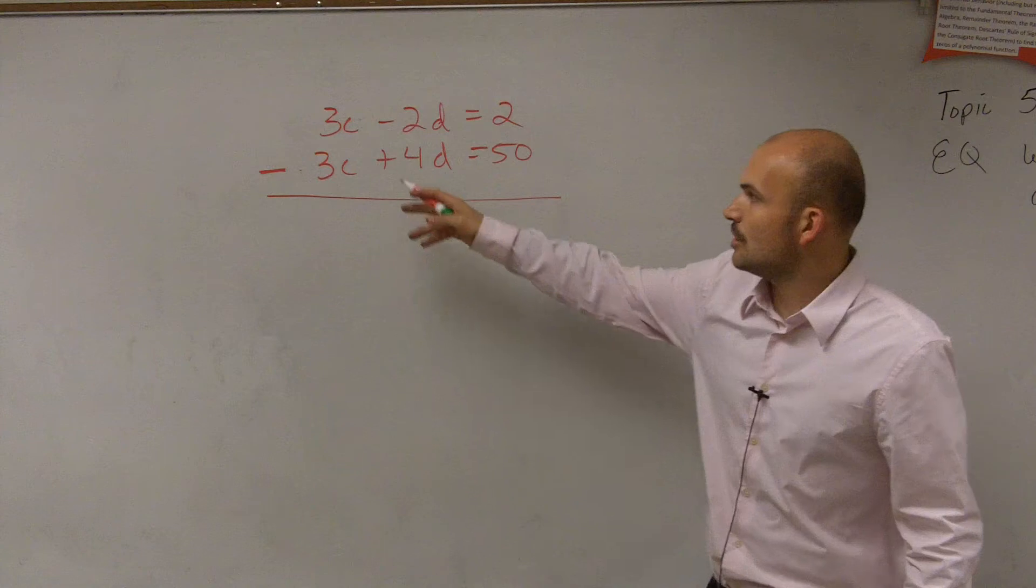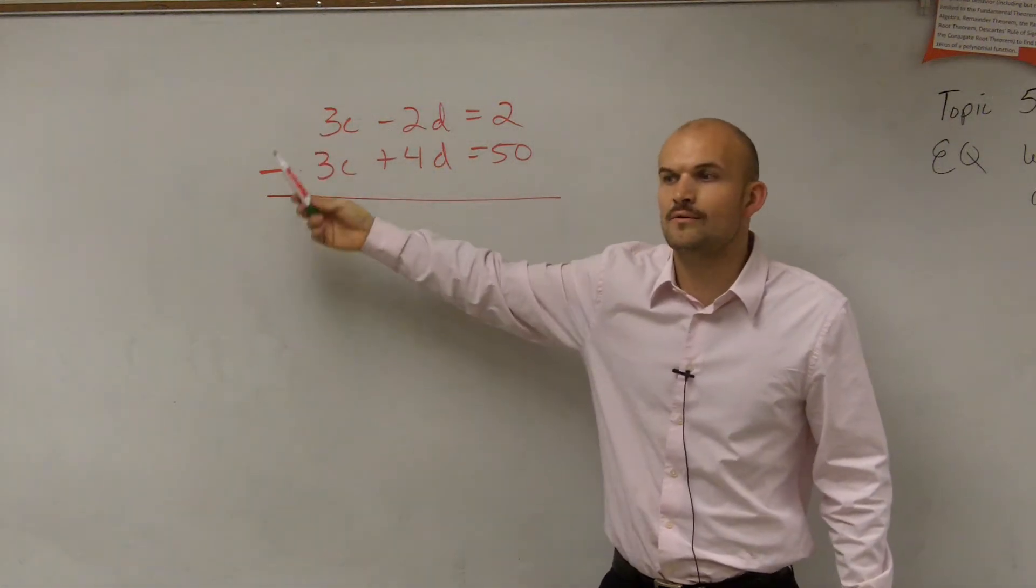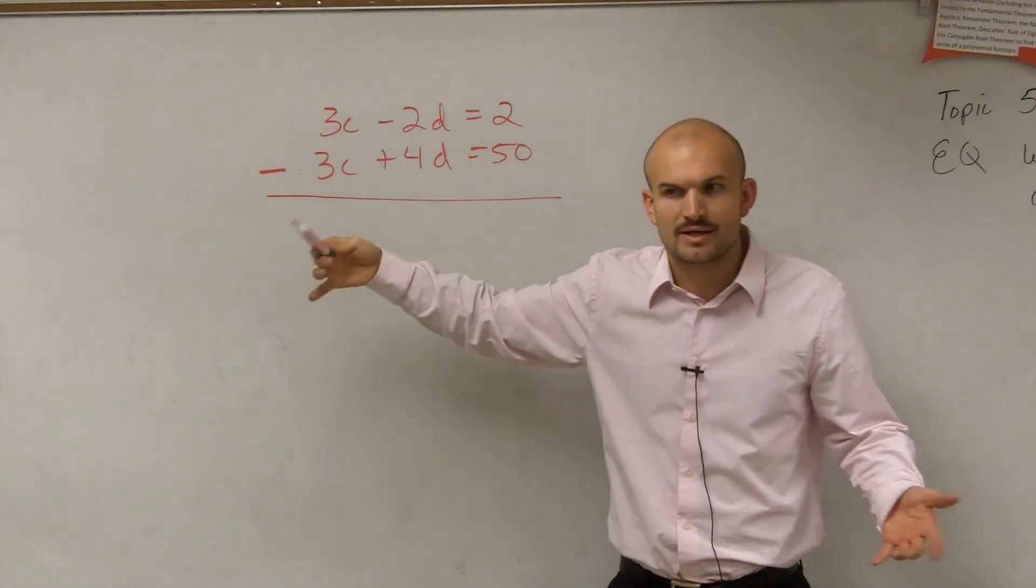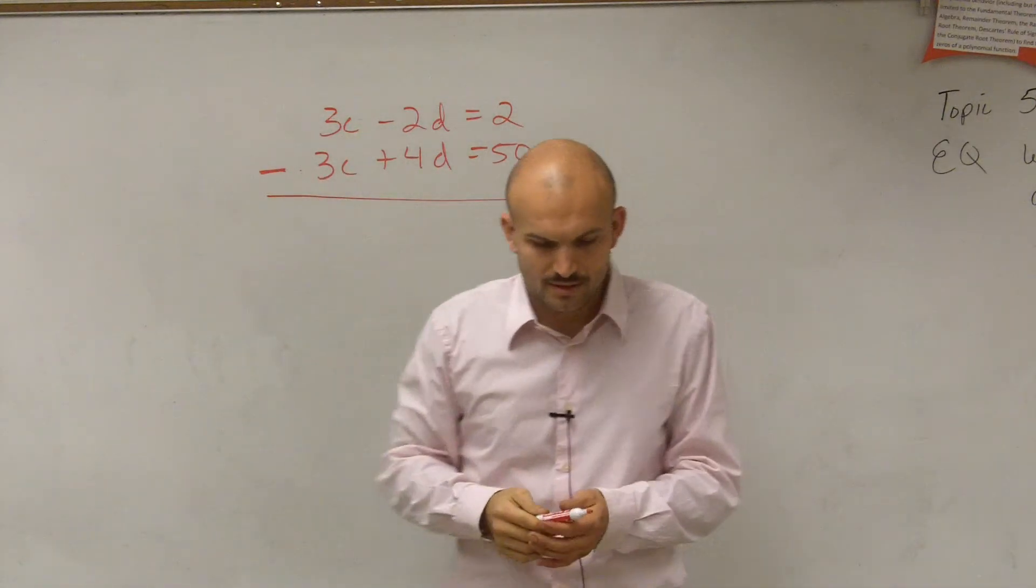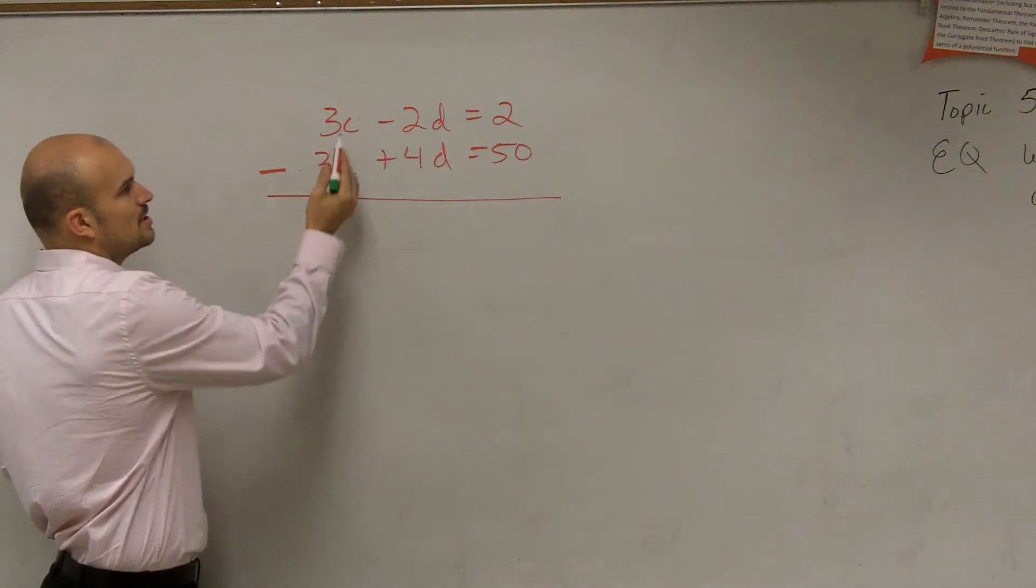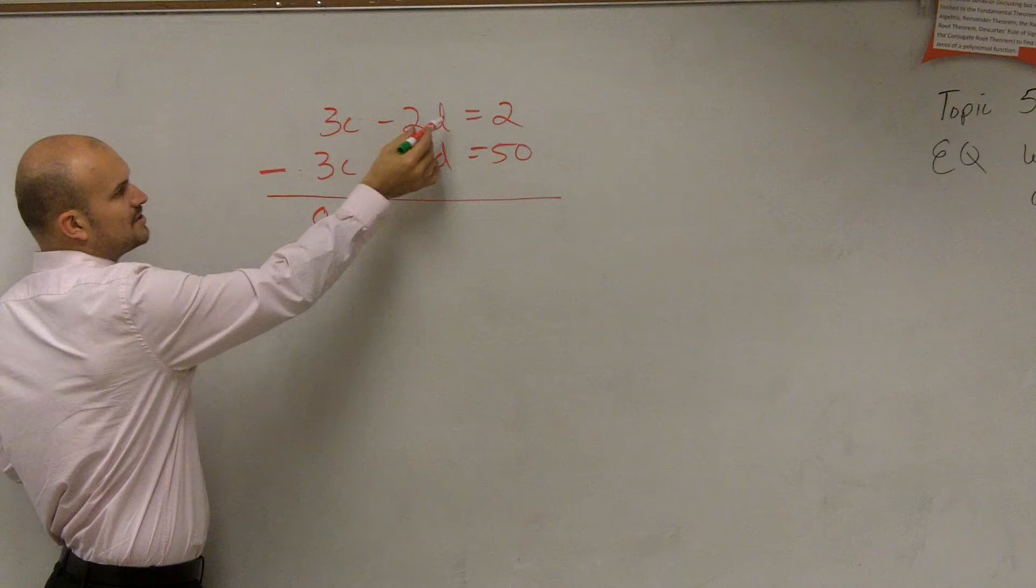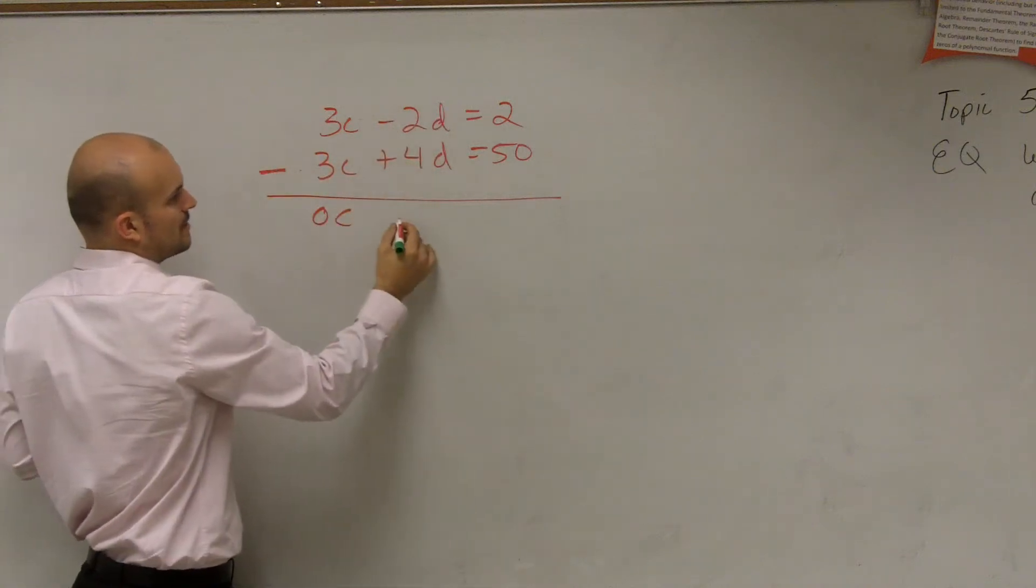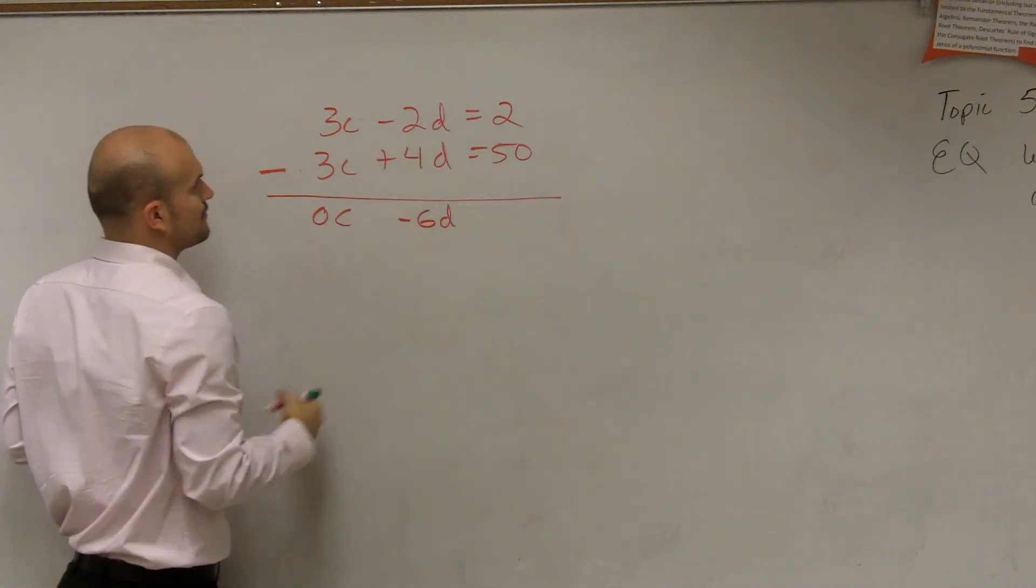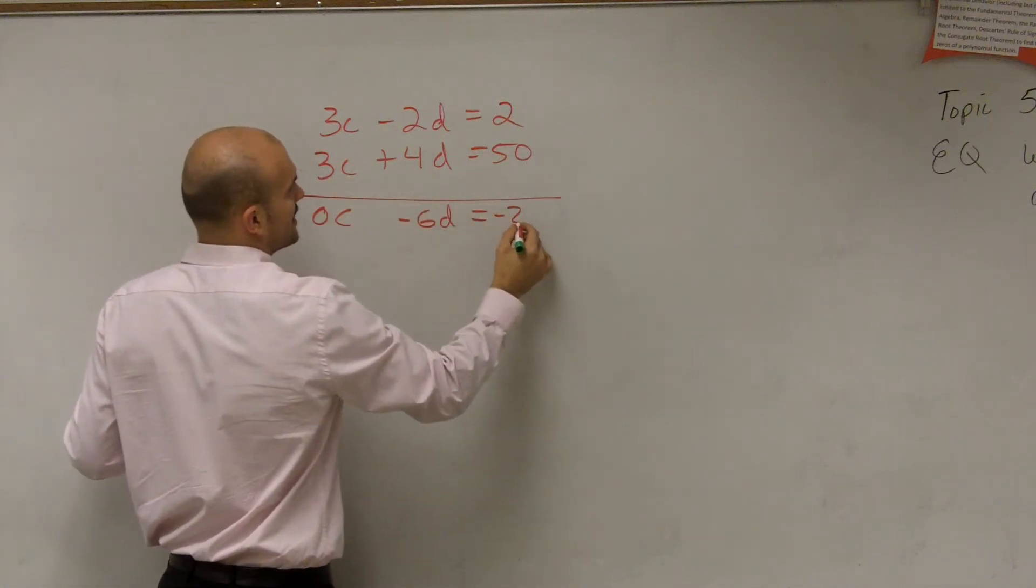So what I'd like you guys to do is when you have the exact same coefficients and they're both the same value, either both positive or both negative, just subtract the equations. So 3C minus 3C is 0C. Negative 2D minus 4D is negative 6D. 2 minus 50 is negative 48.